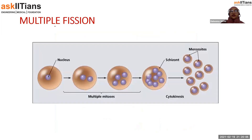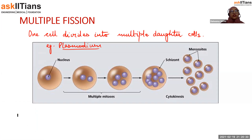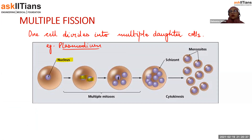Then there is multiple fission, where one cell divides into multiple daughter cells. This is very common in the malarial parasite, plasmodium — this is how it spreads infection in the human body. The nucleus divides into two, then four, and keeps dividing; the cell bursts and releases multiple daughter cells. In plasmodium, these multiple daughter cells are known as merozoites.